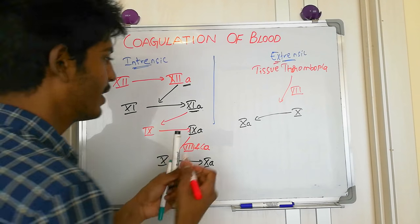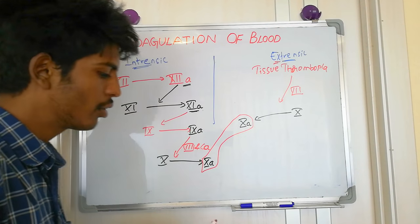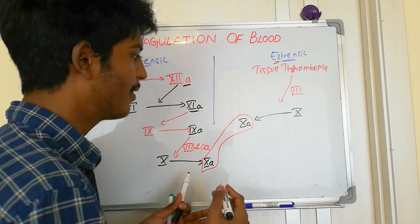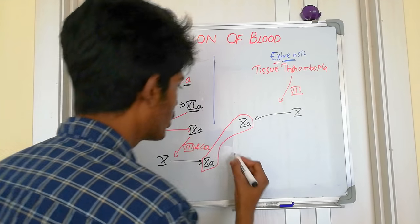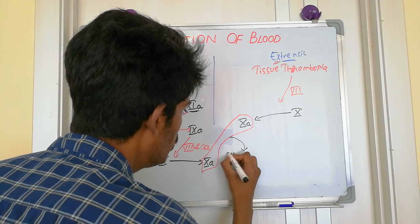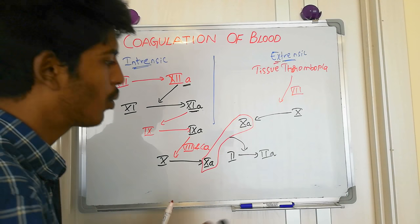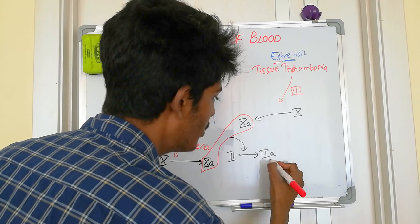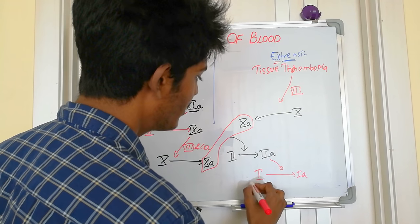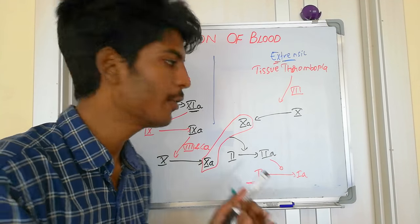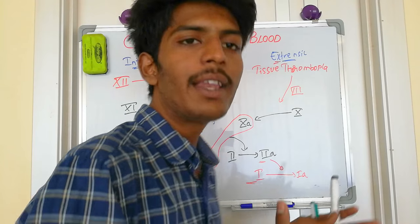Once we have activated factor 10, it activates factor 2, which is prothrombin. Prothrombin is converted into thrombin (2a). Thrombin then converts fibrinogen (factor 1) into fibrin (1a). Fibrinogen is the inactive form, which gets activated with the help of thrombin.